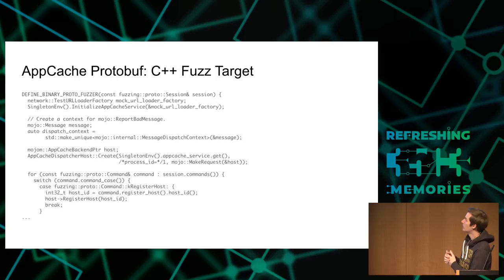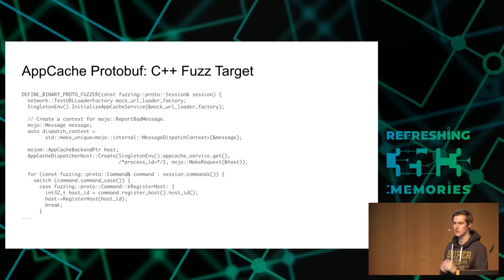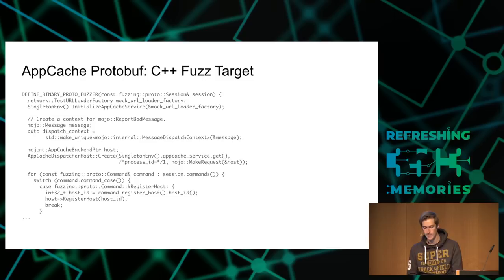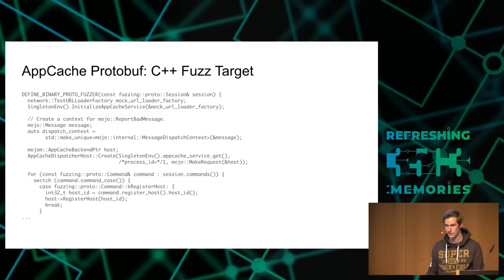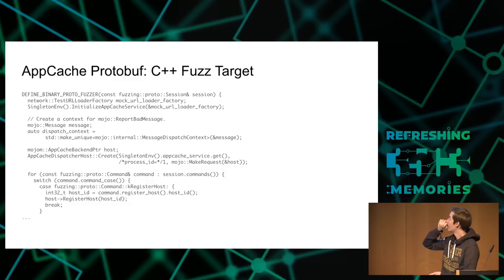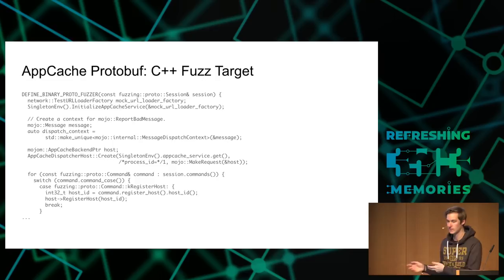How you go from this high-level description to actually fuzzing: I looked at the unit test code and saw how they set up the AppCache service. They let you pass in this URL loader factory — just this kind of unit-testable network request thing. This is how I'm intercepting the network requests and feeding data. I do the setup, create the one render-to-browser host, simulating how you would do the Mojo stuff if it was a real renderer-to-browser interaction. Then I just go through those commands and do these things — you just pull the host ID out of the protobuf message and call the APIs.